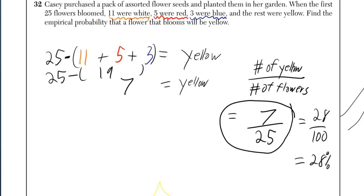So your best guess, if you were to do this again, might be that 28% of them are going to come out yellow.